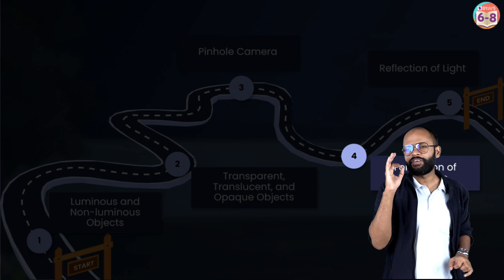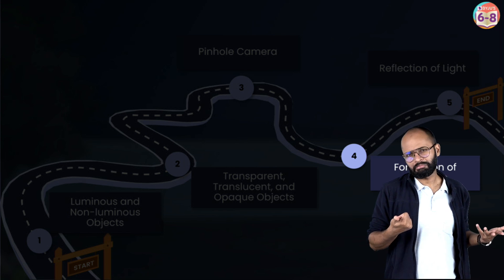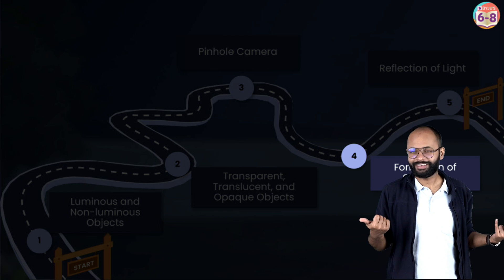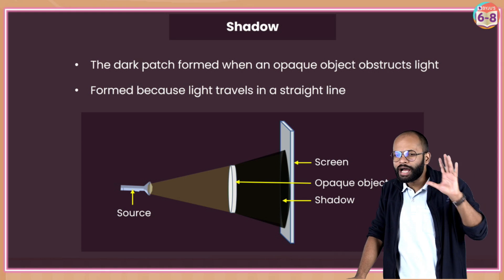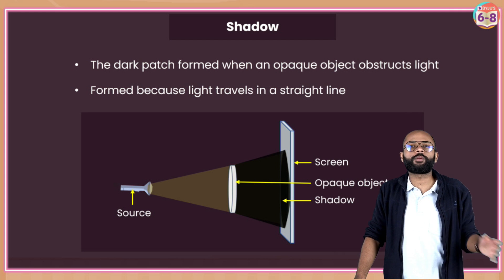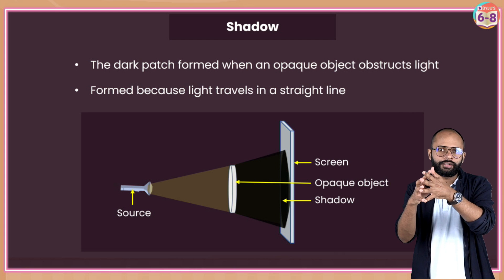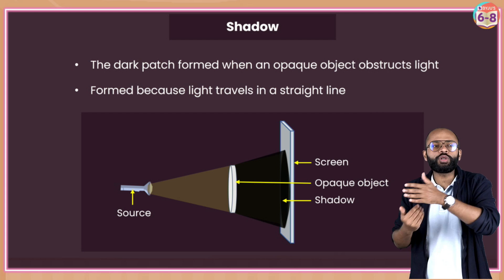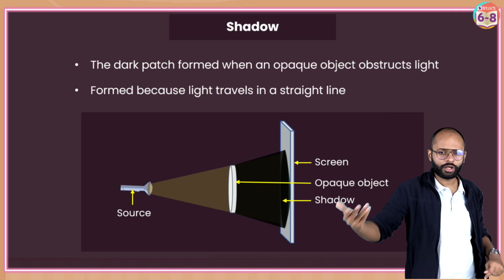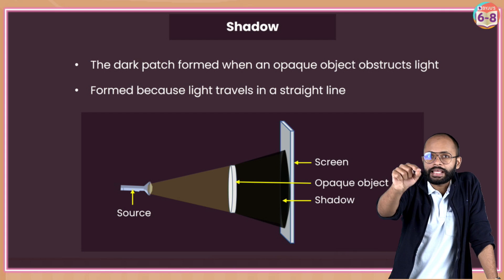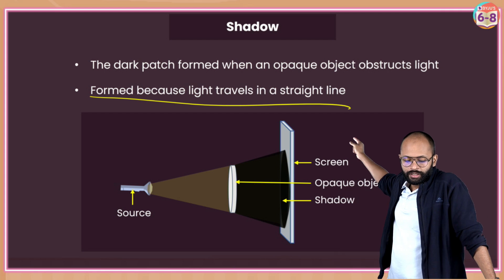Formation of shadows. Very interesting - you can experiment this with just a torch and a wall. What is a shadow? It's a dark patch formed when an opaque object obstructs the light. If light is going somewhere and you put an opaque object in between, this object will stop the light. But around it the light can pass, so on a screen behind it you see a black patch where light could not reach. That is a shadow - formed because light travels in a straight line.